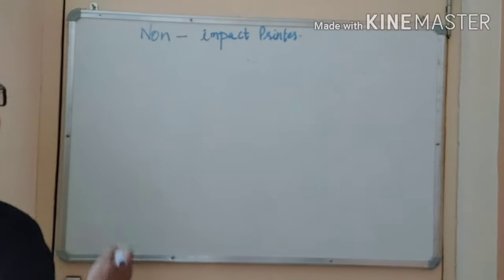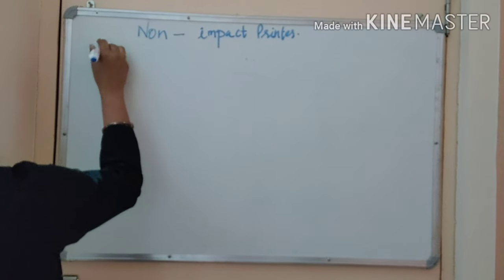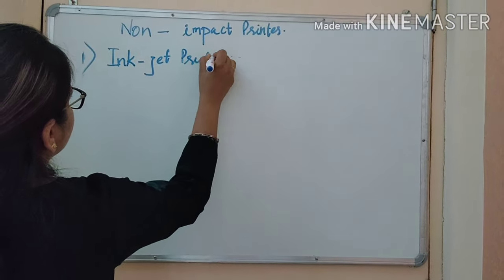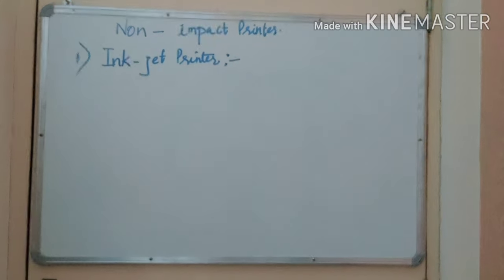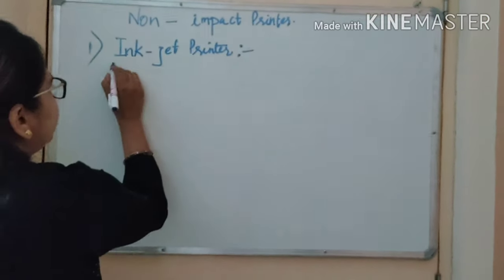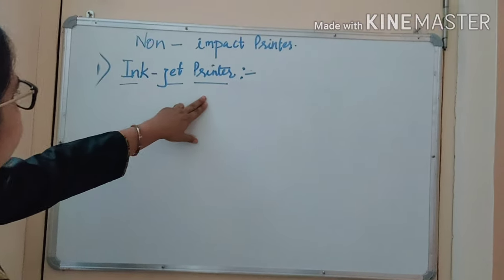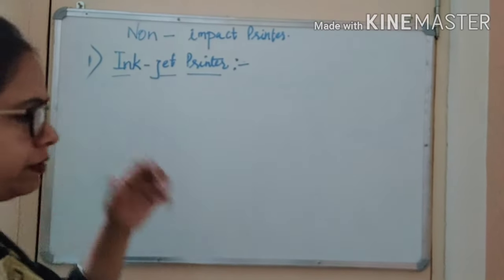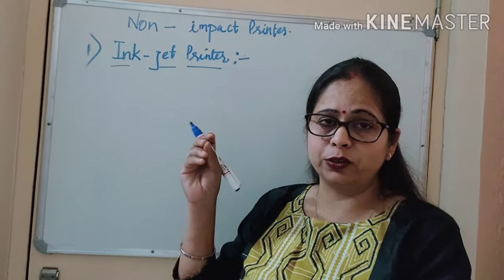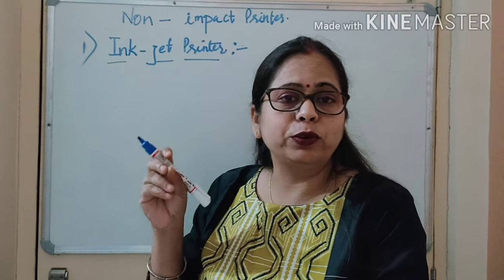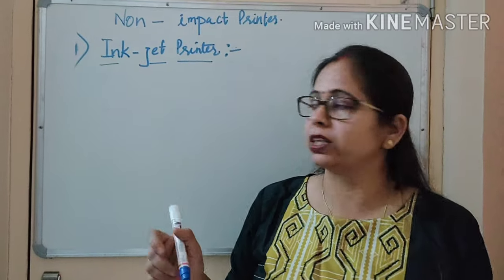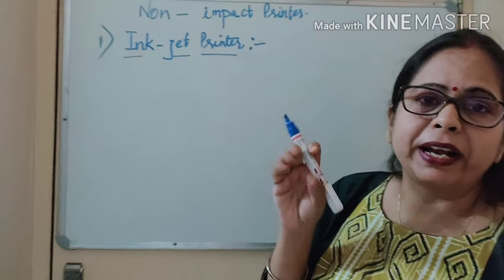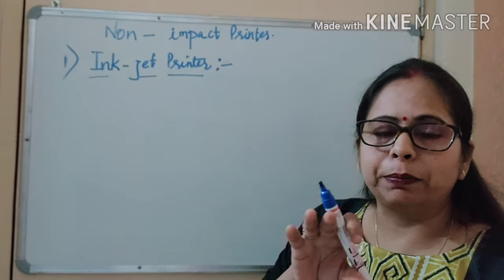Under the non-impact printer category, the very first printer that comes into play is the inkjet printer. In the inkjet printer, ink is being sprayed with the help of jet technology. Just like when you play with colors and push an instrument so a jet of color sprays out — exactly on that principle it works. In this kind of printer, the ink is sprayed by jet technology and with that sprinkling the paper gets printed.